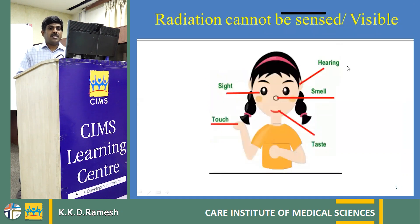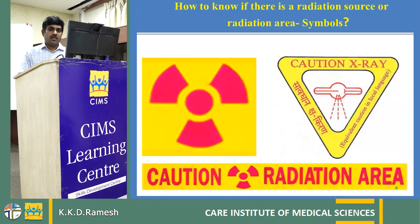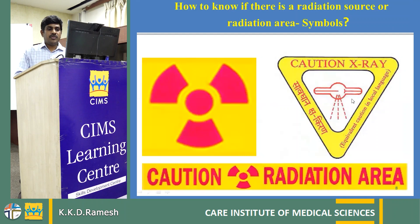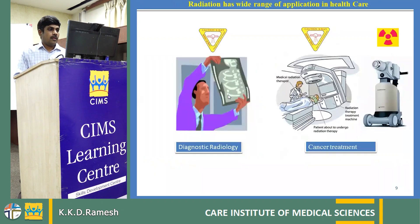Since radiation is not visible, how can we know whether radiation is present or not? The answer is from radiation symbols. This triangular symbol is used for X-ray producing equipment, whereas this trefoil symbol is used for radioactive isotopes.